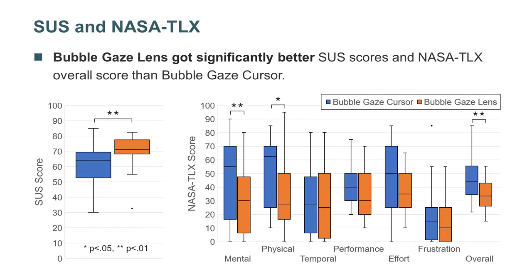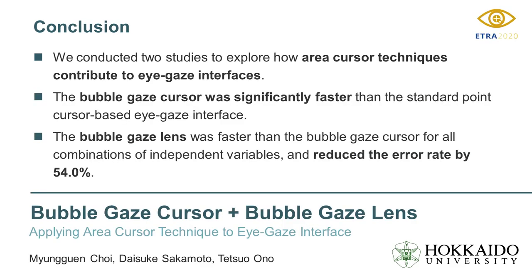Bubble gaze lens received significantly better SUS scores and NASA TLX overall scores than bubble gaze cursor. As a conclusion, we conducted two studies to explore how area cursor techniques contribute to eye gaze interfaces.